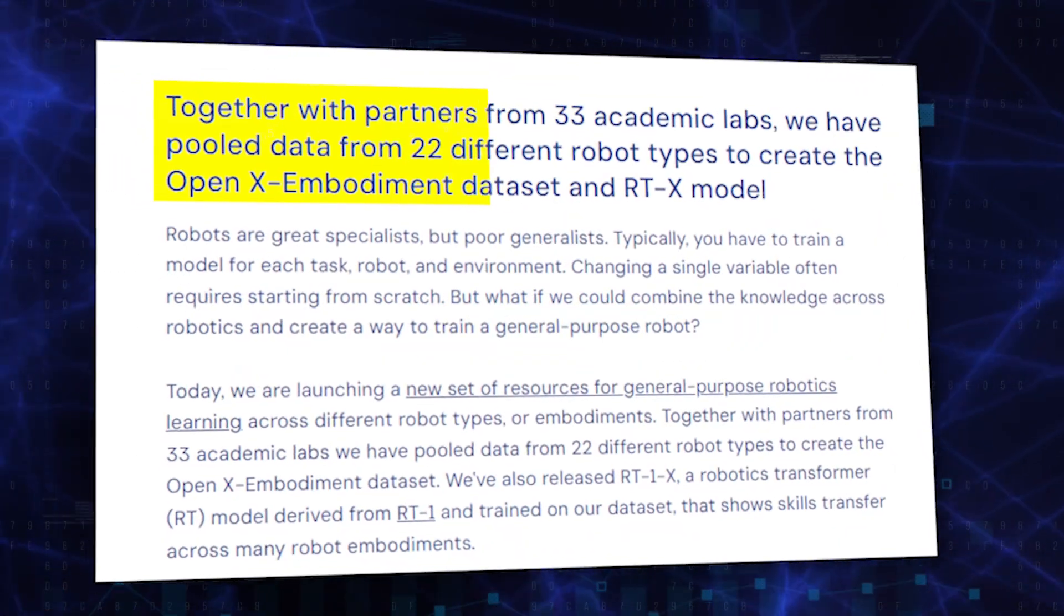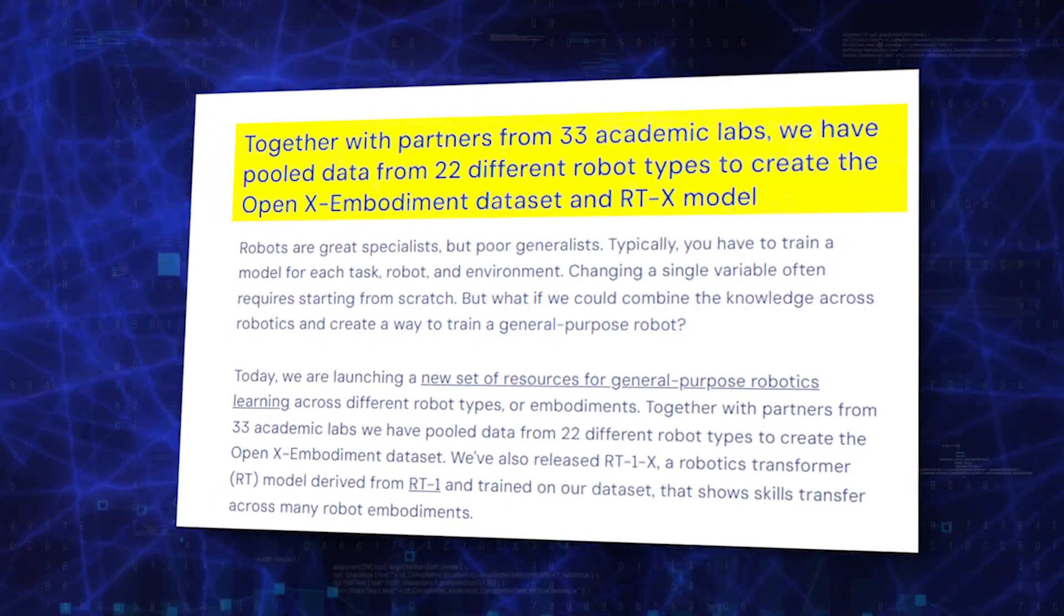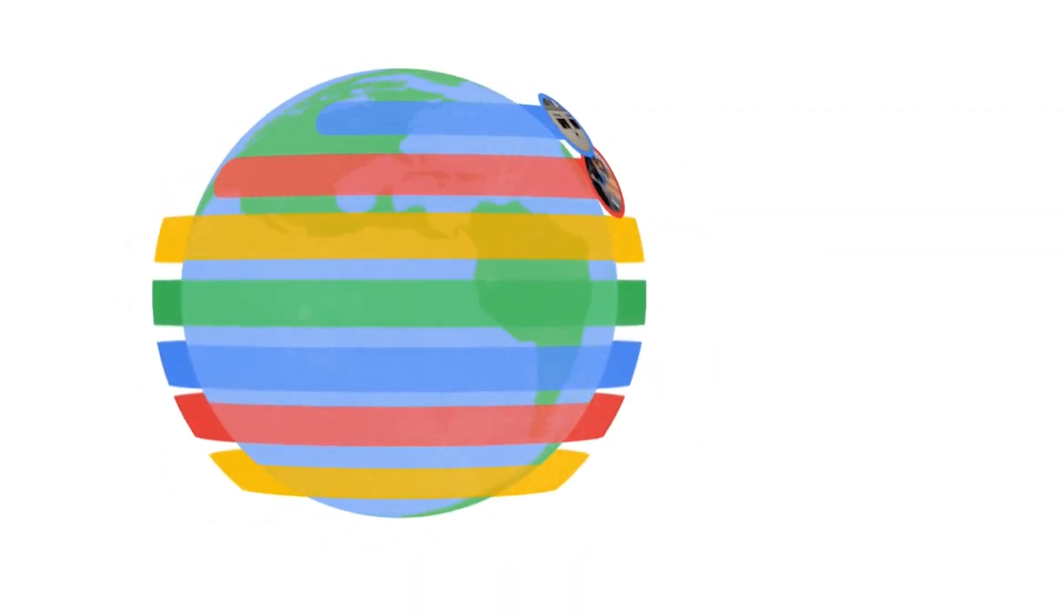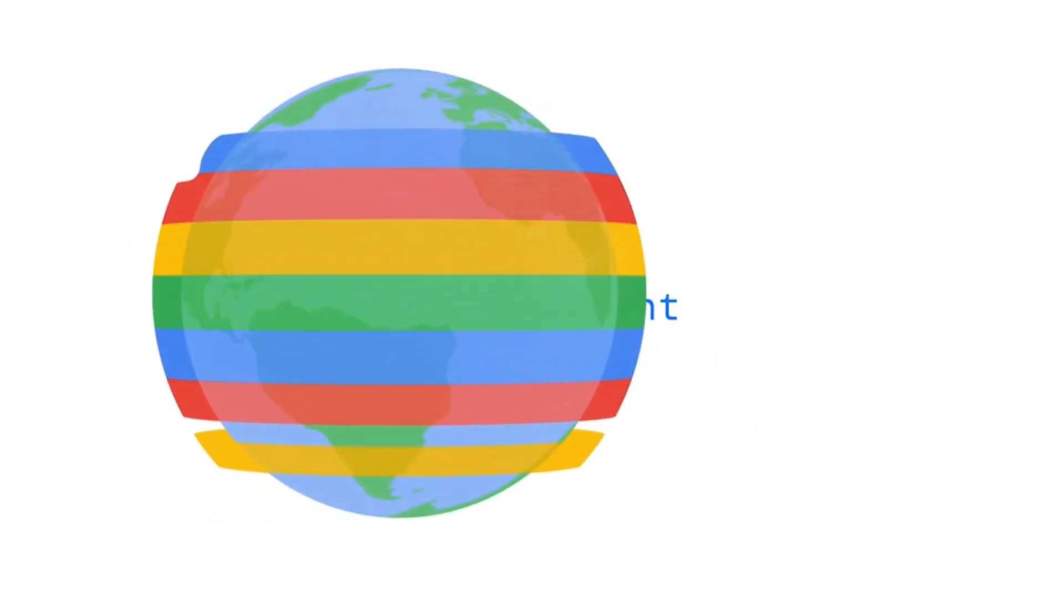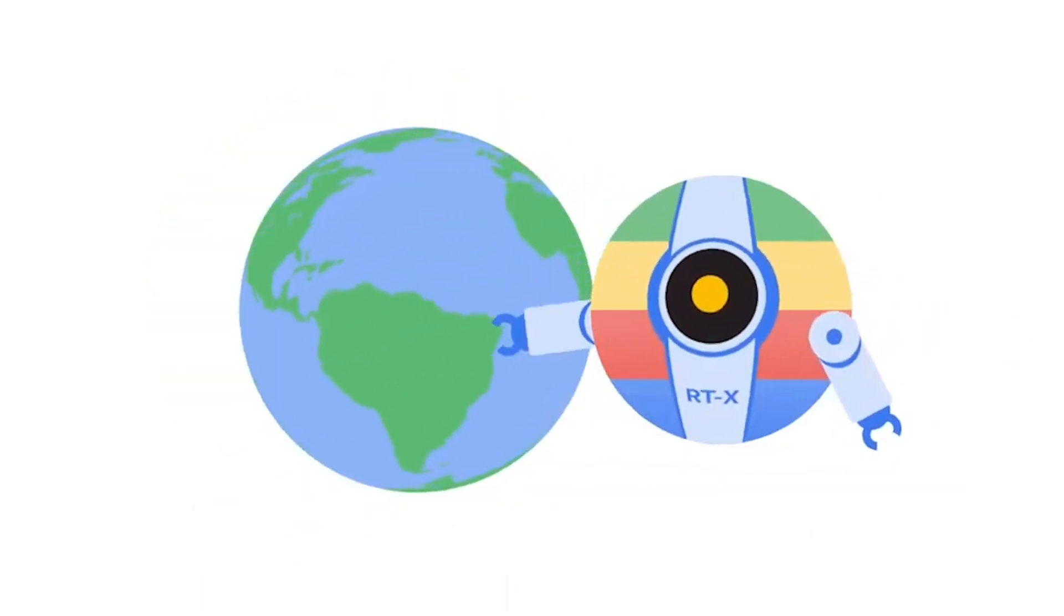They collaborated and gathered data from 22 different types of robots, resulting in the creation of the OpenX embodiment dataset and the RTX model.